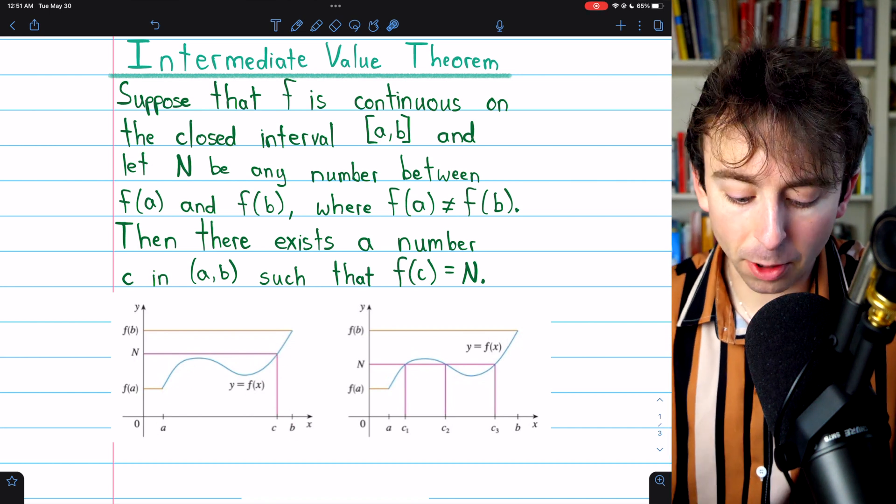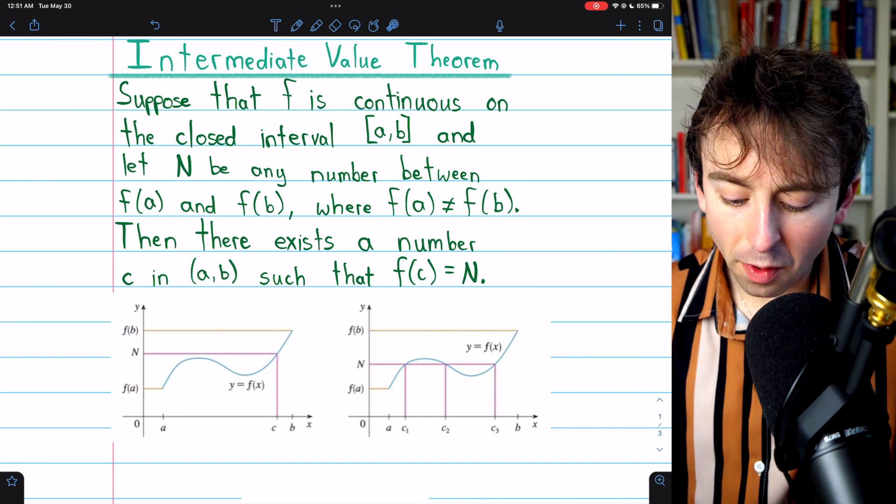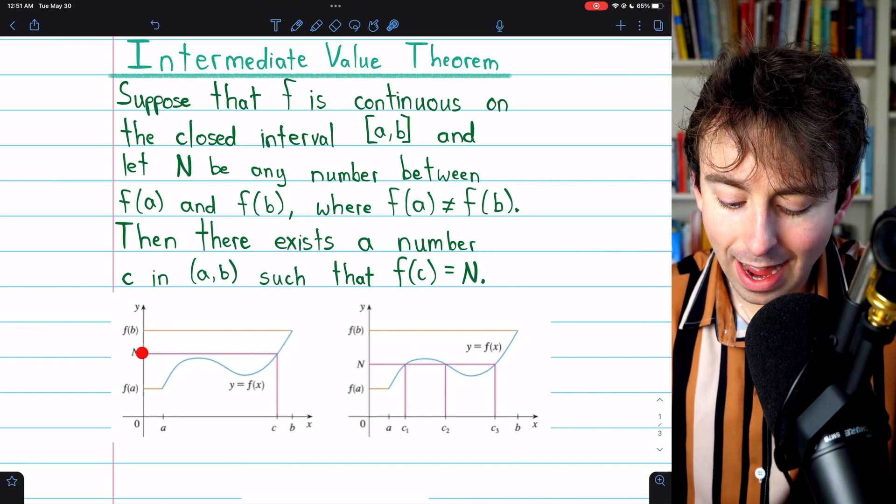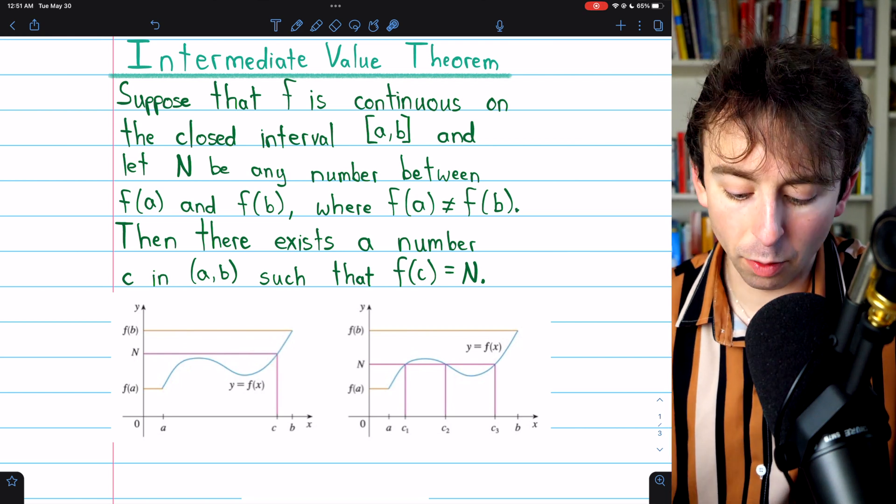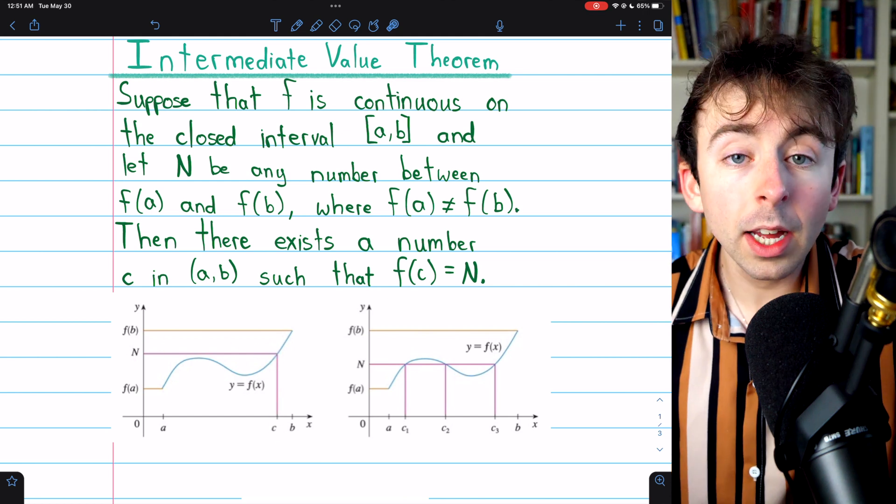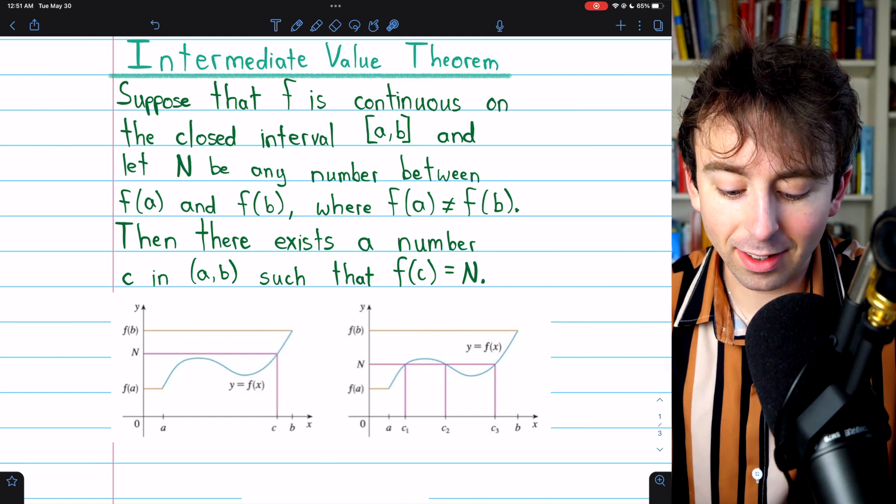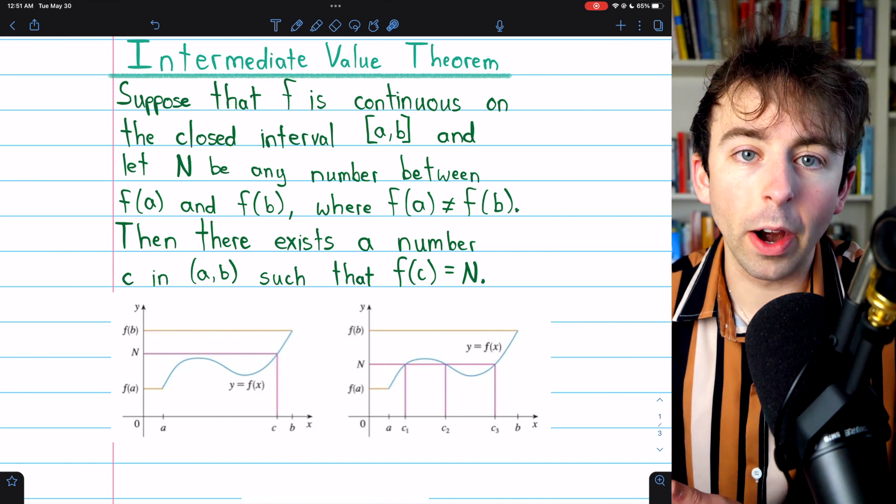And for any number N between f(a) and f(b), the function must take on that number, a value of N at some point c in the interval. At this point c, the function takes on the value of N. The intermediate value theorem guarantees there has to be at least one number c in the interval where this happens.